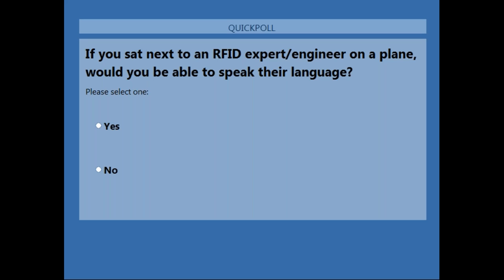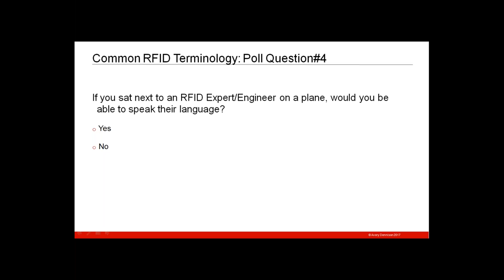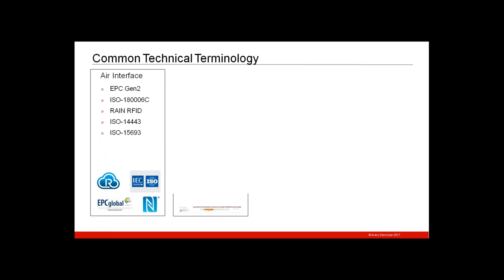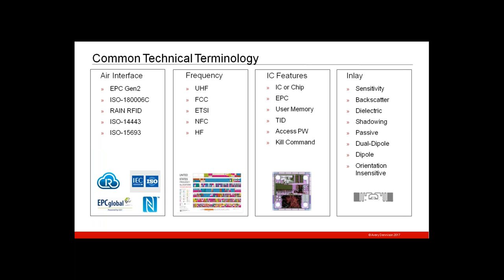Final poll question: if you sat next to an RFID expert or engineer on a plane, would you be able to speak their language? We're about split — 49 percent say yes and 51 percent say not so sure. The reason it's evenly split is probably because many of you are now educated from this webinar. Let's go through common technical terminology broken into four areas: the air interface, frequency, IC features, and inlay. The air interface terms we covered include EPC Gen 2 protocol, ISO, and RAIN — you can see those logos at the bottom.